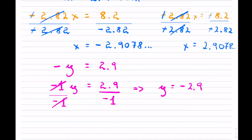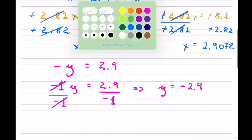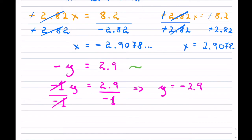Most people, as they get used to these things, won't actually write that step. They'll just simply say y equals and put the negative on the opposite side. So these are little kinds of tricks to think about.